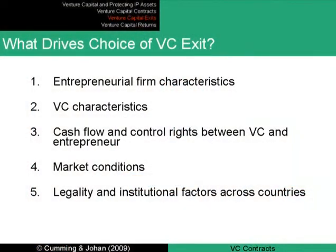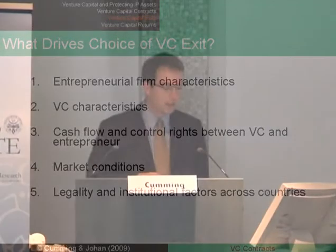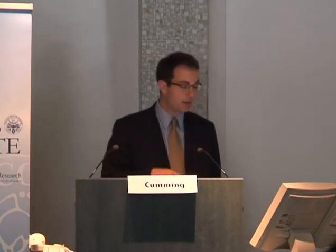What drives the choice of exit vehicles? There are really five main things. First, firm characteristics for both the entrepreneur and the venture capitalist — the ability of both parties matters. Second, how the cash flow and control rights get allocated between the investor and the investee. Third, market conditions. And fourth, as I started out today, the legal and institutional variables across countries — the quality of market and legal conditions — have significant influence on success factors across countries.